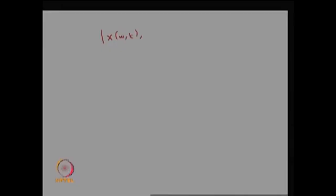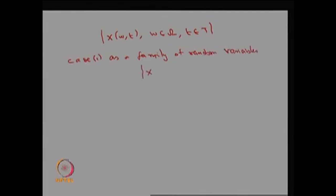Based on the values, the random variable or the stochastic process is going to be X(w, t) where w belongs to omega and t belongs to capital T. There are two approaches to define the stochastic process. The first one, case one, is to define it as the collection of random variables — a family of random variables as X(t) where t belongs to capital T.